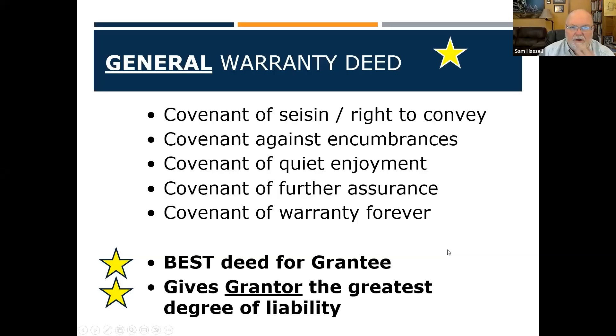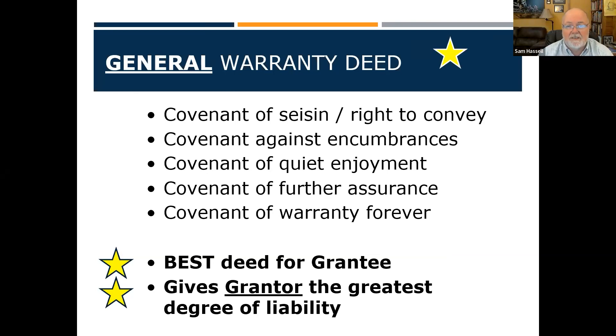Let's review Chapter 5. We started talking about different types of deeds — specifically four types. The first is a general warranty deed, and this is the best one we can have. A general warranty deed is the deed that's going to be asked for in the sales contract. If we give any other type of deed, we have to do an addendum and change that.